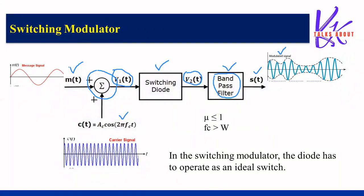The conditions we need before using this switching modulator are that the modulation index should be less than or equal to one, and fc should be less than the bandwidth W. One important point is that the diode in the switching modulator must operate as an ideal switch — during the positive half cycle it will be on and during the negative half cycle it will be off.